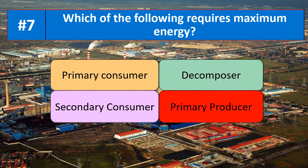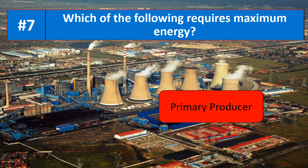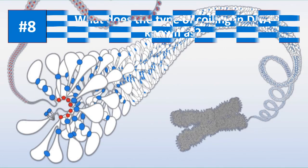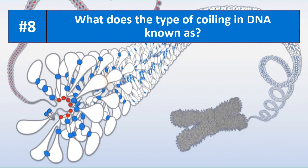Question number seven: which of the following requires maximum energy? Is it the primary consumer, decomposer, secondary consumer, or primary producer? The primary producer is the one who requires maximum energy.